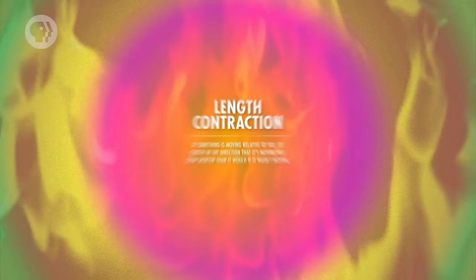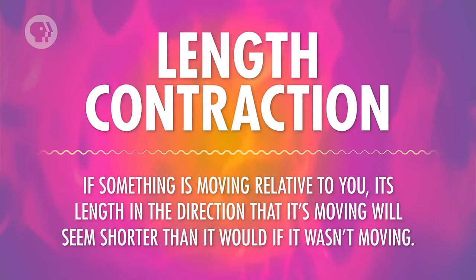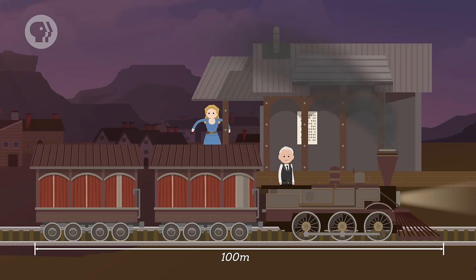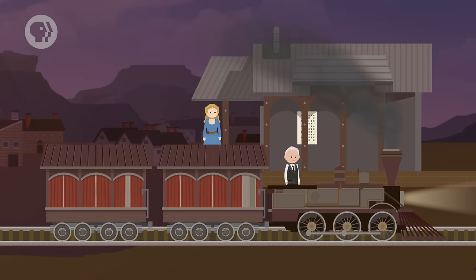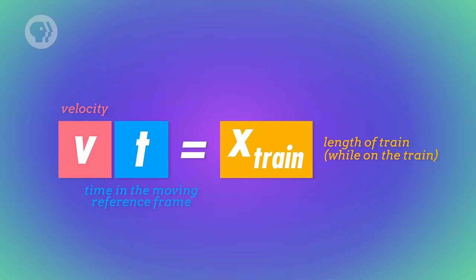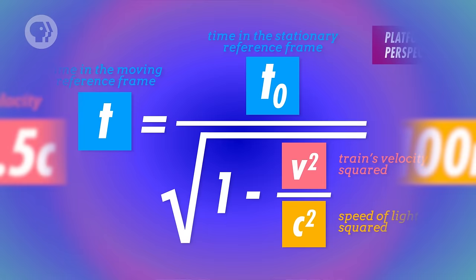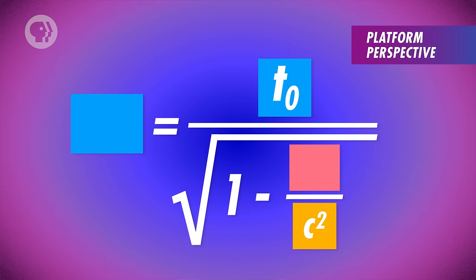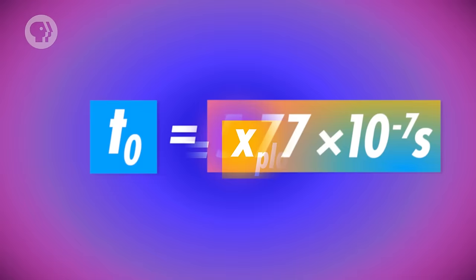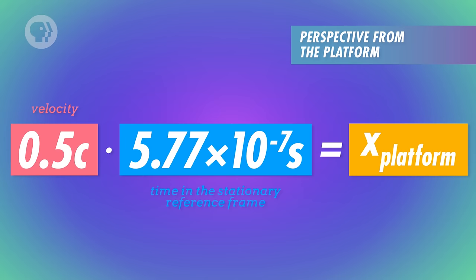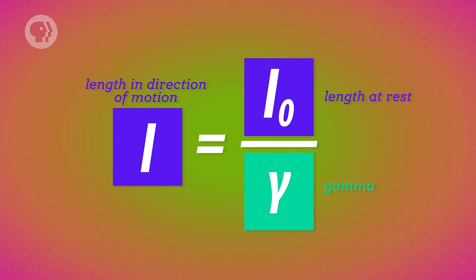As if time slowing down wasn't weird enough, there's also length contraction. Length contraction means that if something is moving relative to you, its length in the direction that it's moving will seem shorter than it would if it wasn't moving. So you might have measured the train to be 100 meters long before it left the station. If Bob measures the train from where he's standing, it would be 100 meters long. But from your perspective on the platform as it moves past you, the train will be shorter. Let's say you want to measure the train as it moves past the spot where you're standing. The train is moving at half the speed of light. From Bob's perspective, it takes 666 nanoseconds for the train to pass you. Velocity multiplied by time equals distance, so Bob calculates that the train must be 100 meters long. Now you try taking the same measurement — but we already know that time moves faster for you than for Bob. While 666 nanoseconds pass for Bob, only 577 nanoseconds pass for you. And if the train takes 577 nanoseconds to pass you while it's moving at half the speed of light, it must be 86.6 meters long. In general, when something's moving past you, its length in the direction of its motion will be equal to the length you'd measure if it was standing still, divided by gamma.